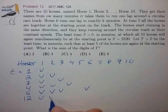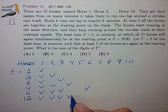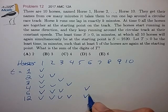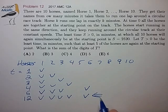And that will have horses one, two, three, four, and six back to the starting line. So this looks like our answer.